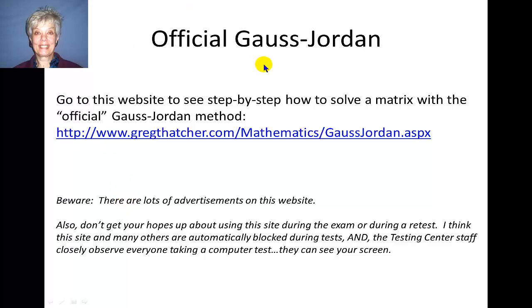Alright. Now, if you want to learn to do the official steps to solving with the Gauss-Jordan method, I recommend this website. It's an excellent website, except there are a lot of advertisements on the website. Nonetheless, I think you'll find this very complicated, but you'll be able to see the difference between my method, which waits until the end to put in all the ones, and the official Gauss-Jordan method, which uses a lot of fractions from the very beginning, and I think it's unduly complicated. Okay. Talk to you later. Bye-bye.